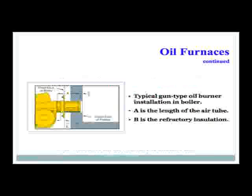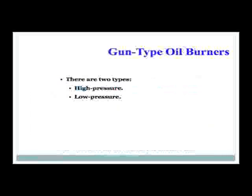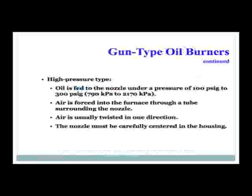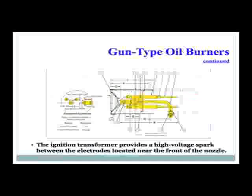A typical gun oil burner installation is shown in this picture. 'A' is the length of the air tube, and 'B' is the refractory installation. There are two types of gun-type oil burners: high pressure and low pressure. In the high-pressure type, oil is fed to the nozzle under pressures between 100 PSI and 300 PSI. The air is forced into the furnace through a tube surrounding the nozzle and is usually twisted in one direction. The nozzle is centered carefully in the housing. The ignition transformer provides a high-voltage spark between the electrodes near the front of the nozzle. In this picture, number 13 is the nozzle, 14 is the electrodes, and 7 is where the ignition transformer connects to the electrodes.